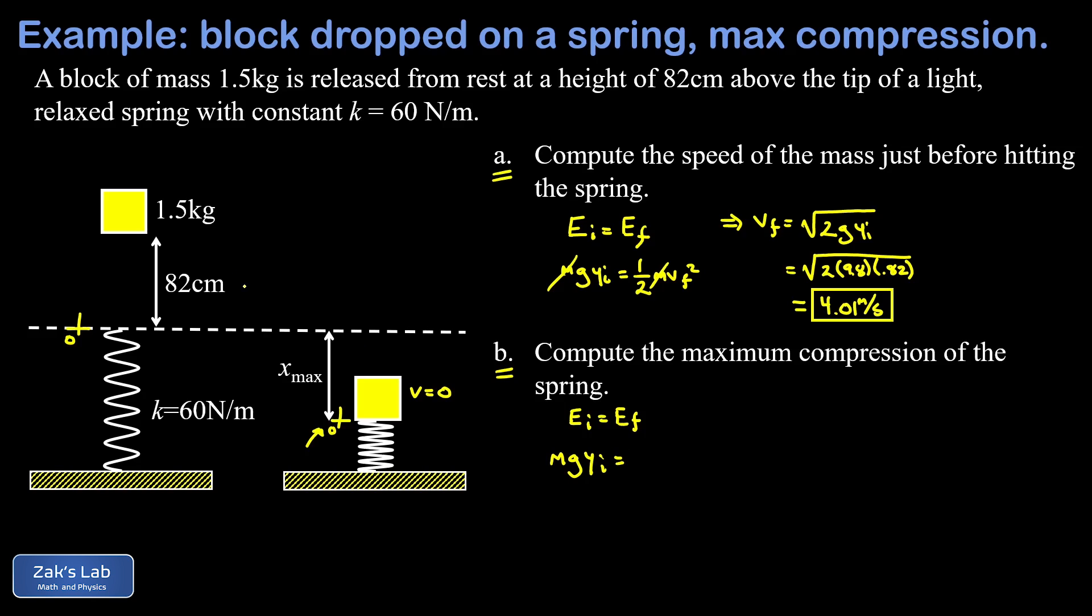Now in the final state, there's also no kinetic energy because we're at that turning point, and we put the origin of the y coordinate there so we don't have to worry about gravitational potential energy. All we have is the spring potential energy, so one half k x max squared.